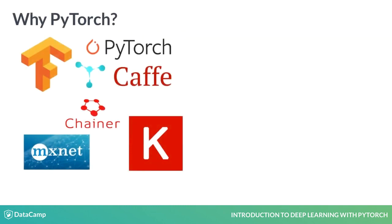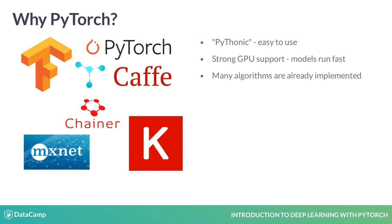There are tons of great deep learning libraries out there. We chose PyTorch because of its simplicity, because it has strong GPU support, and it has already implemented many deep learning algorithms. Its strong object-oriented programming support makes it a natural choice for many companies like Facebook and Salesforce, while also being one of the most used deep learning libraries in academic research.